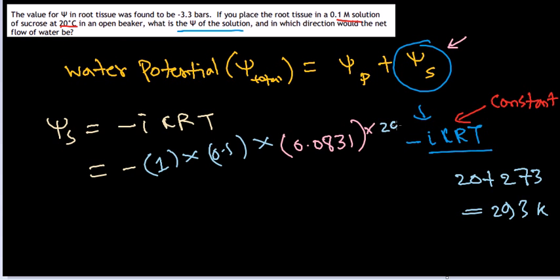Every unit will be in SI units. Once we start to calculate the value with simple multiplication, we get the value of minus 2.43 bars.